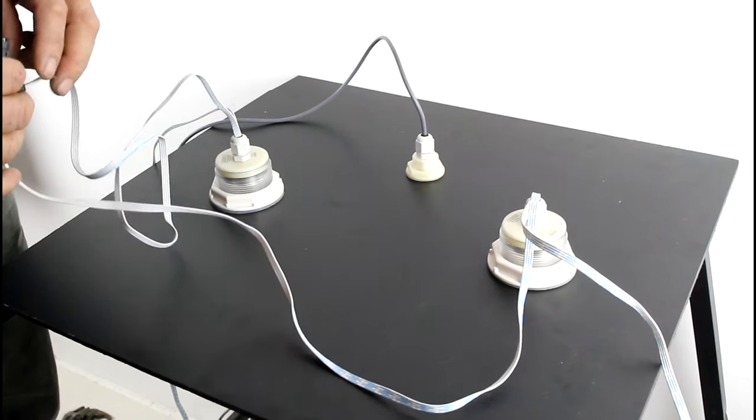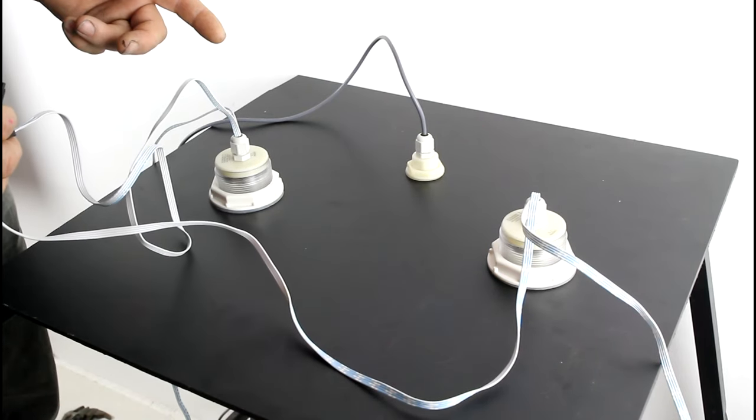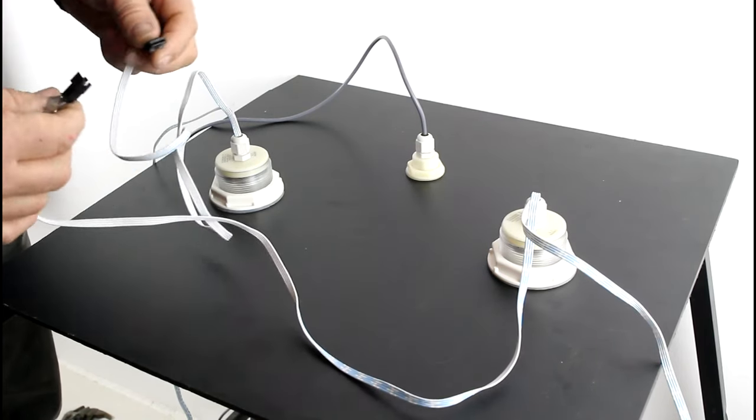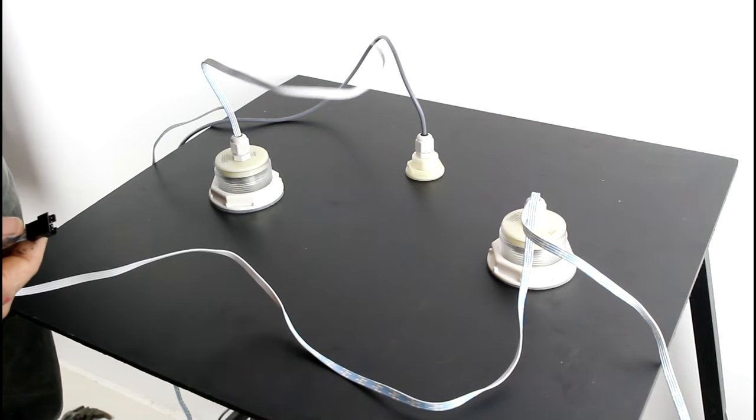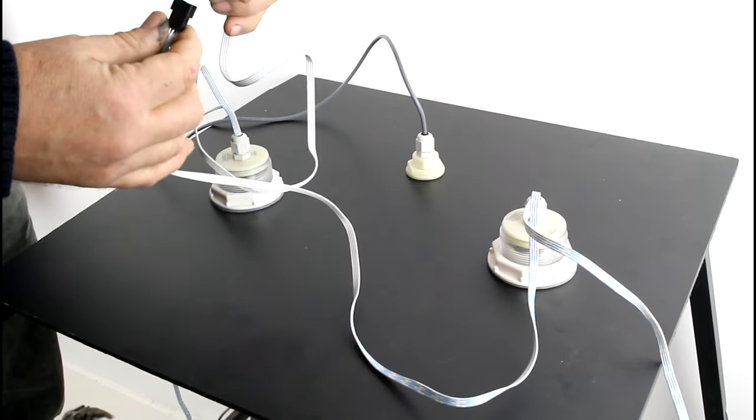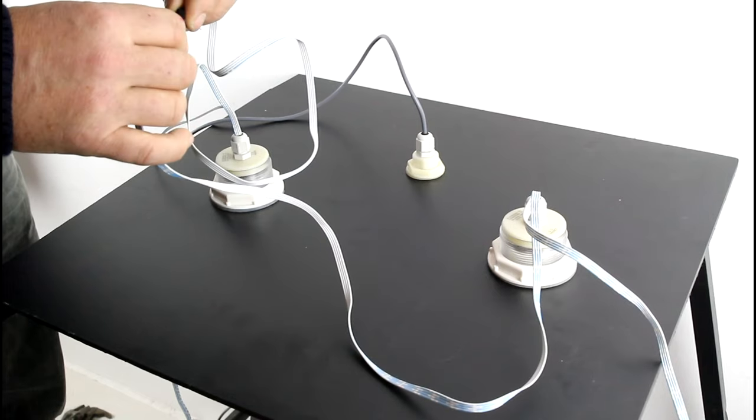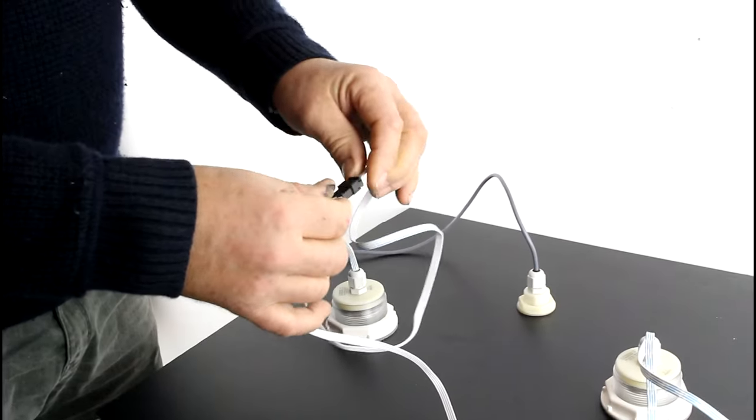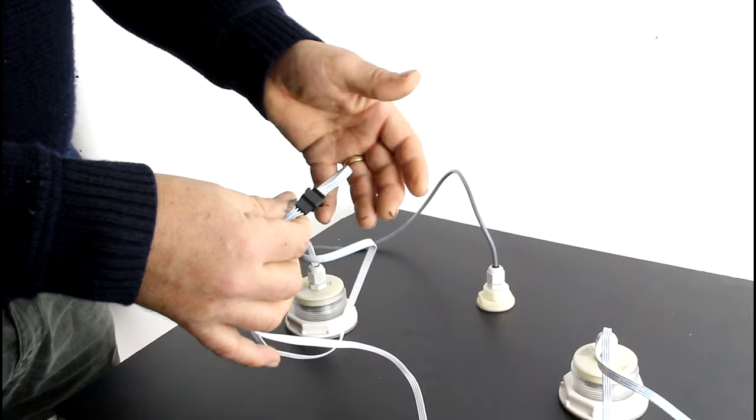This is the back of the lights. Now, if you've got more than one light, it is really easy to fit together. You have a lead coming from this one, a lead coming from that one. And it's as simple as pushing in the connector like that. And you've connected that one to that one.